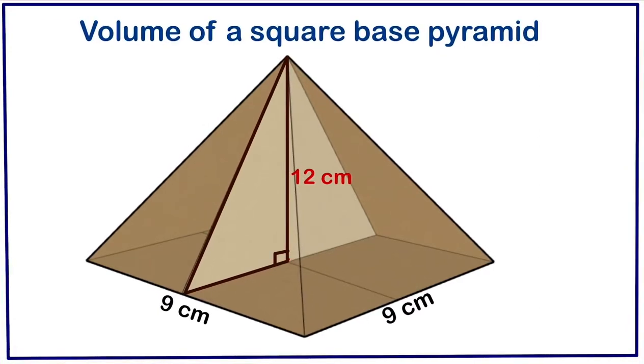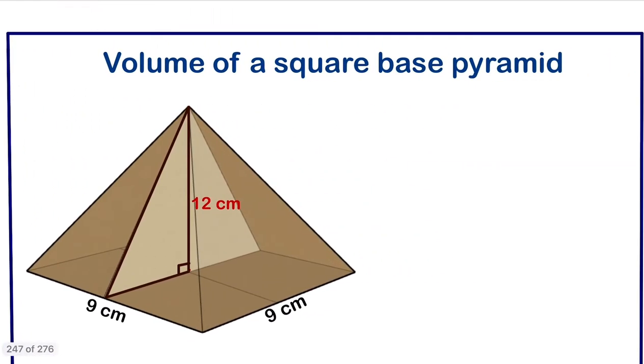Welcome to Mathematics Poster. Today we are going to calculate the volume of a square base pyramid. To calculate the volume, the formula of a pyramid is V equals one third base area times the height.